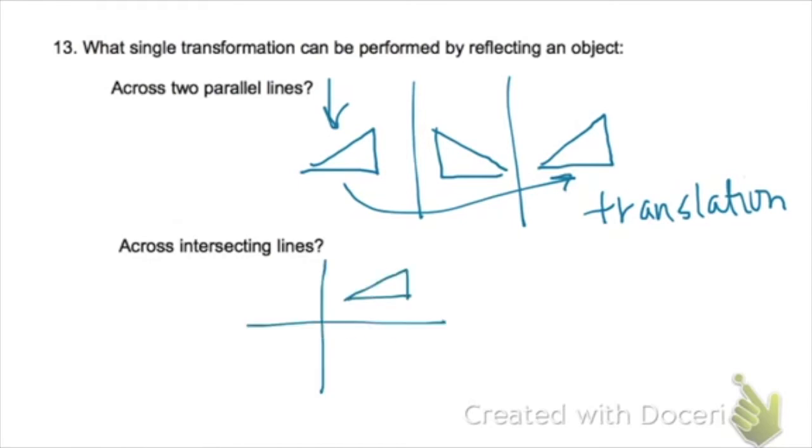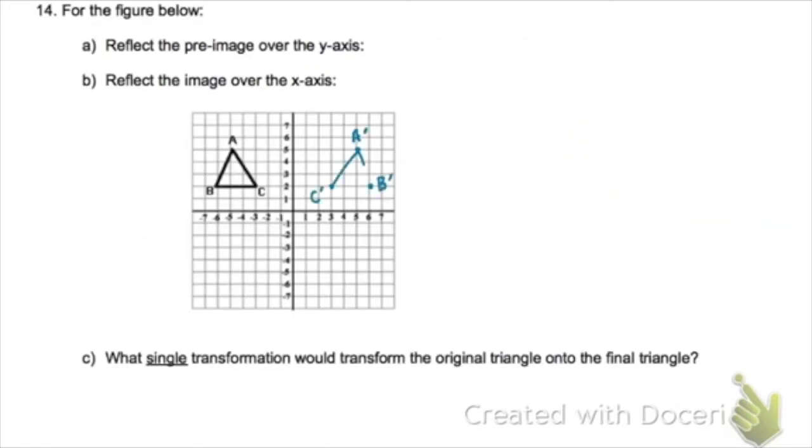Across intersecting lines is rotational symmetry. We reflect the image over the y-axis that goes into the first quadrant, reflect again over the third quadrant, and the single transformation that occurs there is a 180 degree rotation, just like the previous question, because those are two intersecting lines.